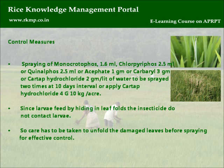Control measures: Spray Monocrotophos 1.6 ml, Chlorpyrifos 2.5 ml, Quinalphos 2.5 ml, Acephate 1 gram, Carbaryl 3 grams, or Cartap hydrochloride 2 grams per litre of water — spray twice at 10-day intervals, or apply Cartap hydrochloride 4G at 10 kg per acre. Since larvae feed hiding in leaf folds, care must be taken to unfold the damaged leaves before spraying for effective control.